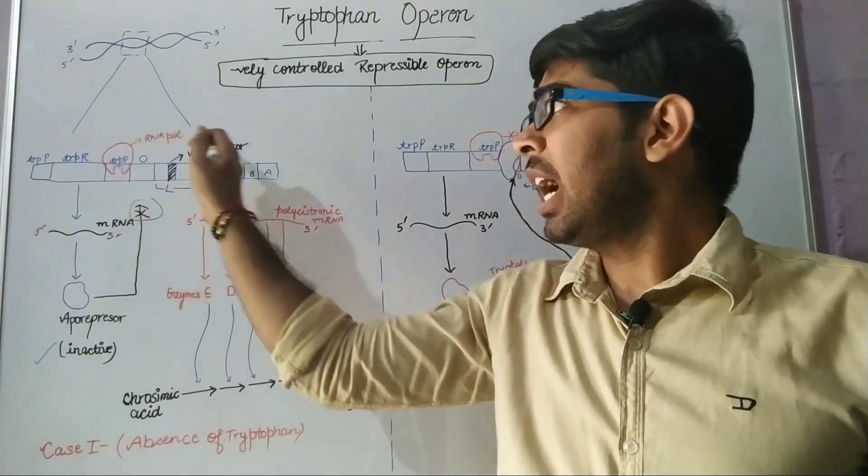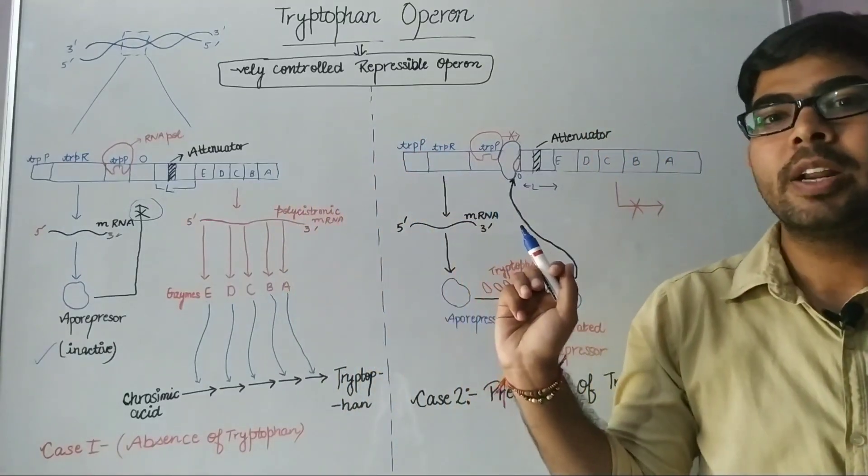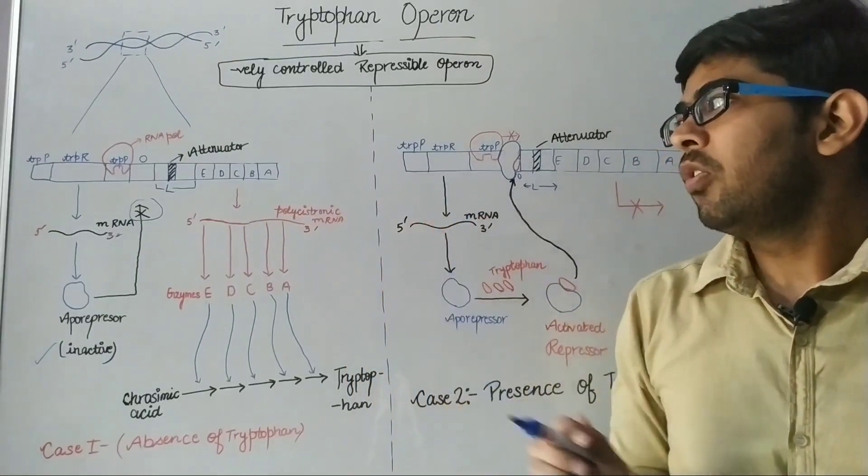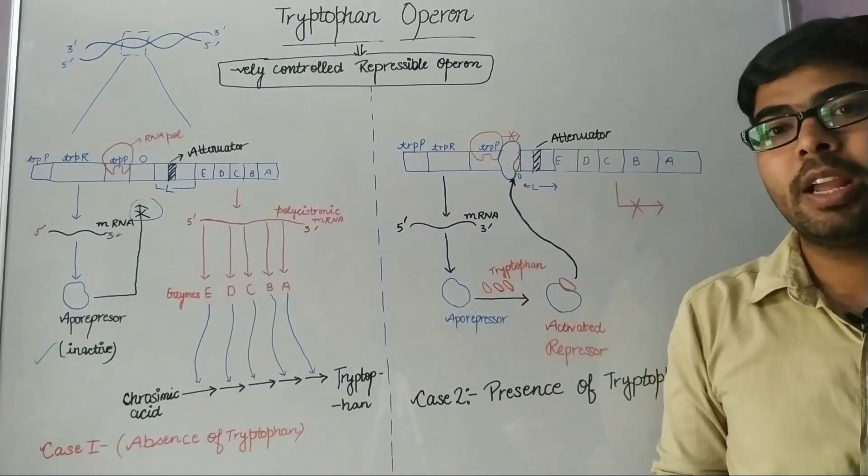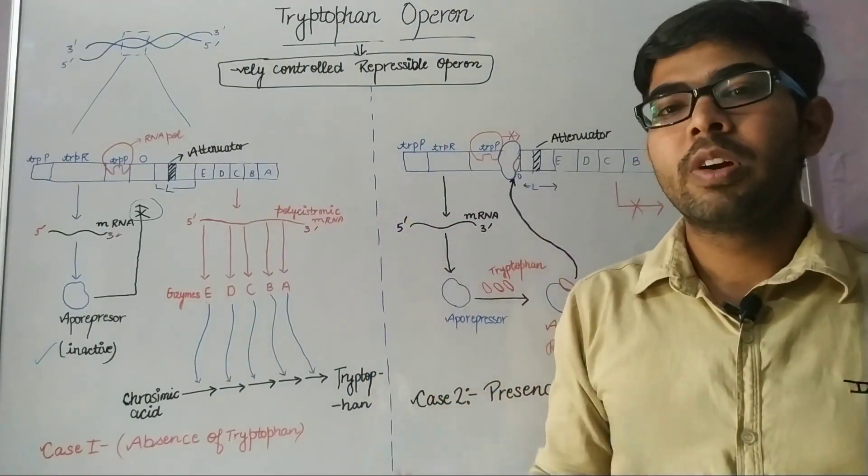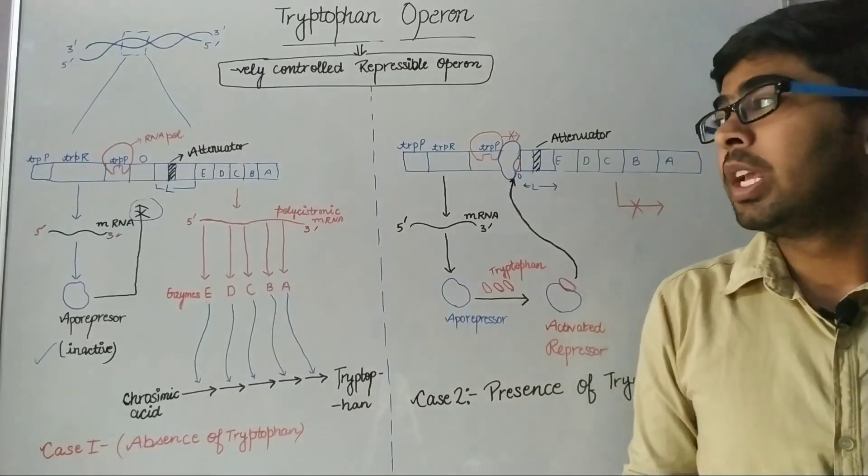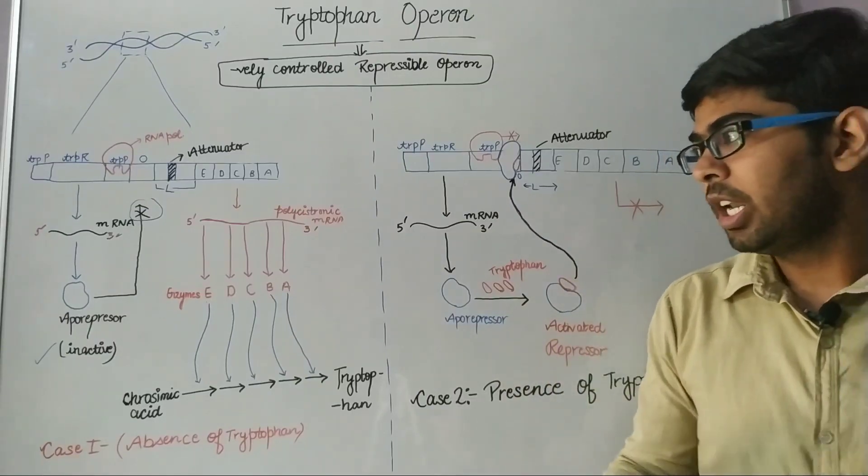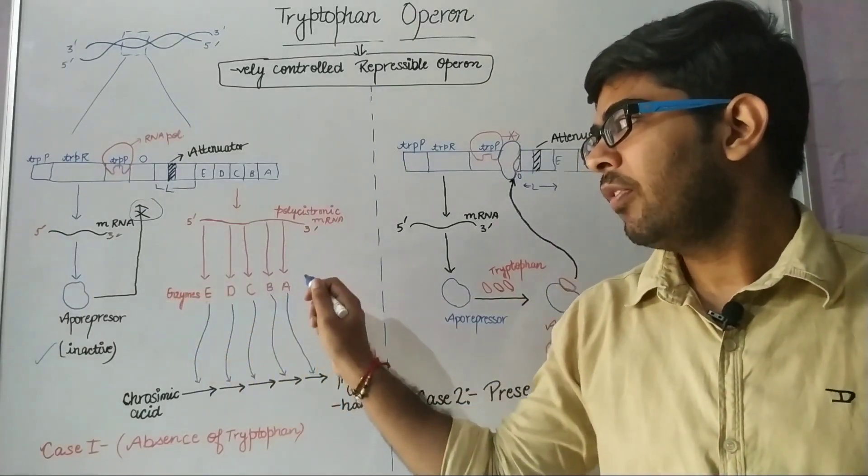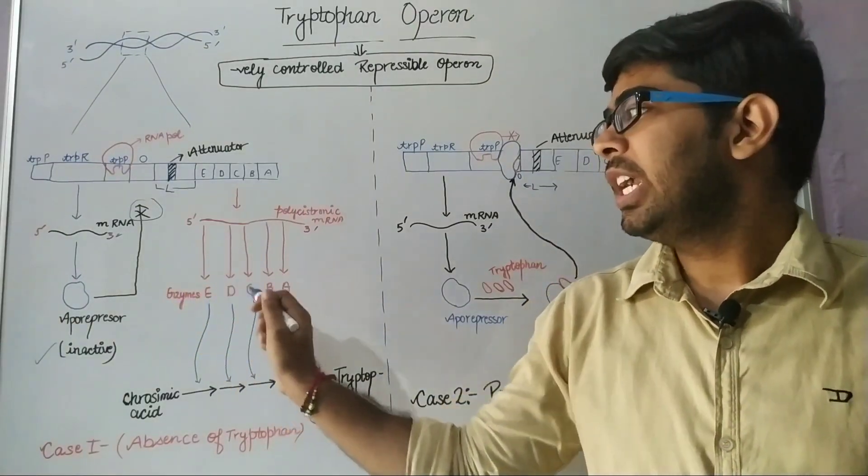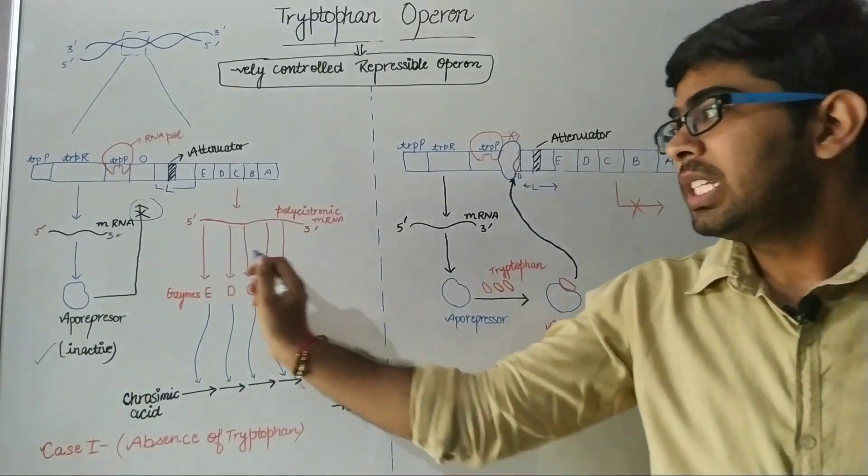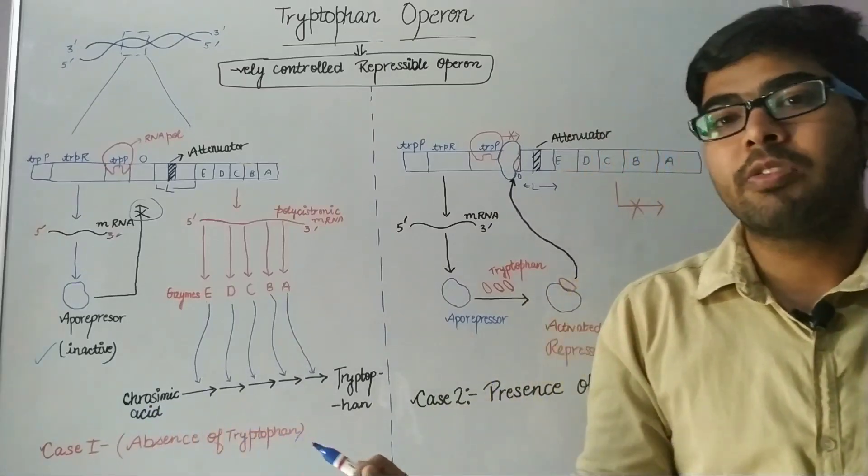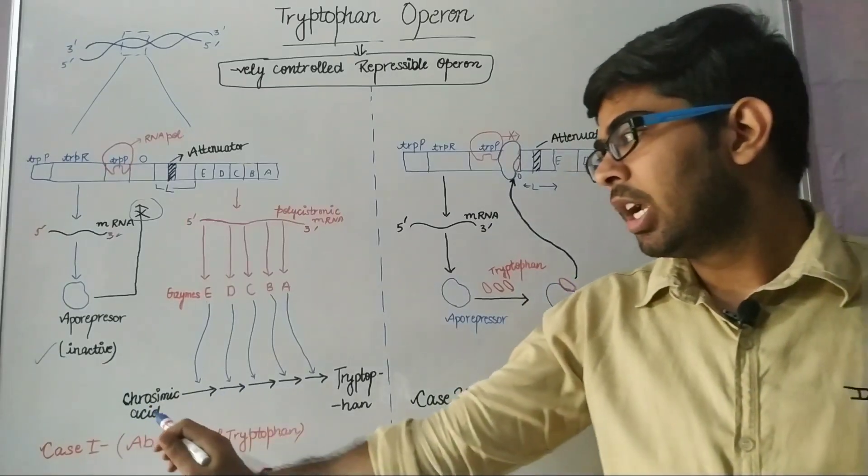Now, the tryptophan promoter gene allows RNA polymerase to bind to it, and the operator is free. That's why RNA polymerase proceeds further and leads to the formation of polycistronic mRNA by the process of transcription.